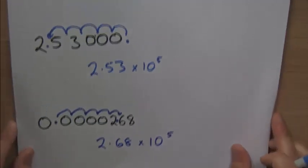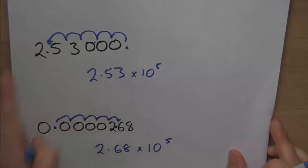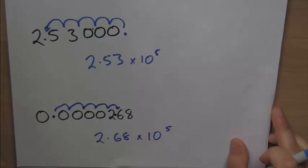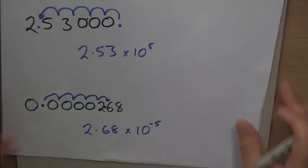However, if we look at the previous example, a 5 meant the decimal point moved that way. The decimal point's gone that way this time. And to show that it goes that way, we put in a minus sign.